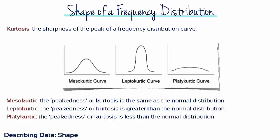Leptocurtic distributions have more kurtosis, more peakness. They're thinner and more pointy. Platycurtic distributions have less kurtosis or less peakness. They're broader and flatter.